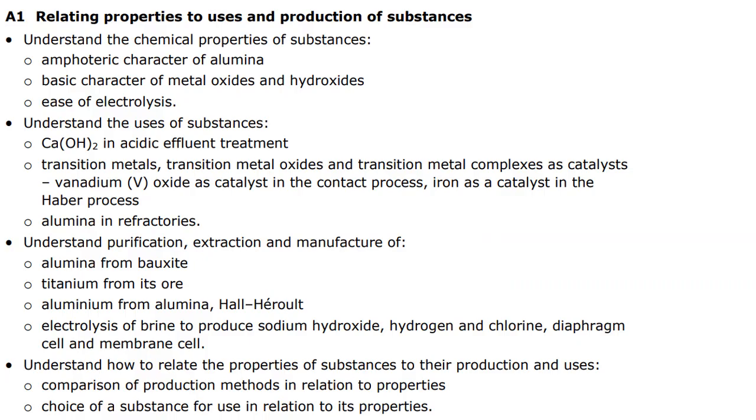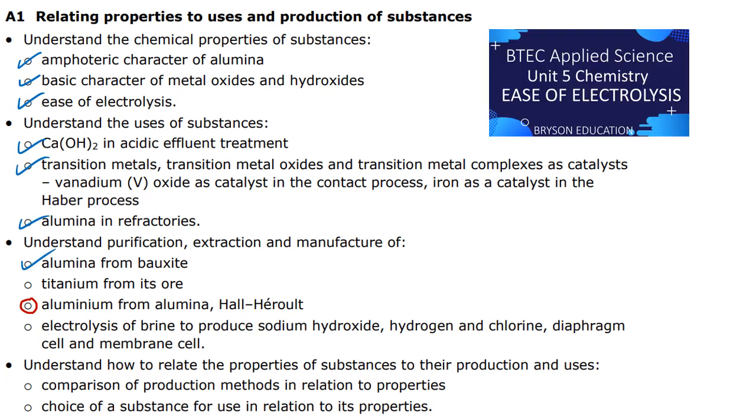Looking at the specification for learning aim A1, you can see that this fits down the bottom here at extraction and manufacture, specifically aluminium from alumina. If you haven't looked at the previous videos, I have covered all the above learning aims and I suggest you go away and watch them in order, particularly because you do need to have prior knowledge on electrolysis in order to understand this lesson today. So go away and make sure you've at least watched ease of electrolysis first.